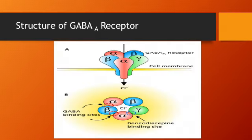The GABA-A receptor chloride ion channel is basically a macromolecular complex. It is a hetero-oligomeric glycoprotein having a pentameric structure, meaning having five or more membrane-spanning subunits. As you can see on the slide, this pentameric structure of the GABA-A receptor has 2-alpha, 2-beta and 1-gamma subunits. From the top view of the receptor, the chloride ion channel is in the core, formed by the protrusion of amino acids.